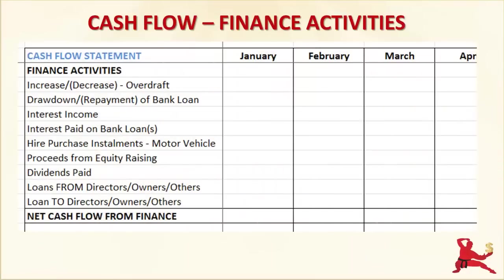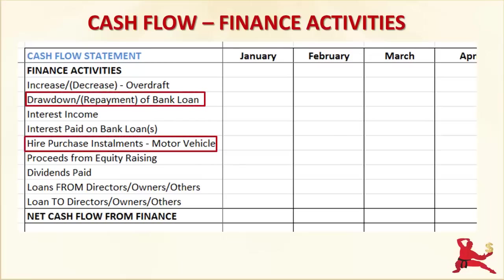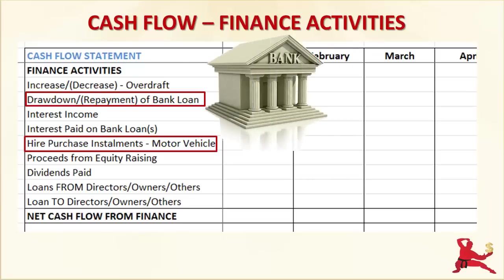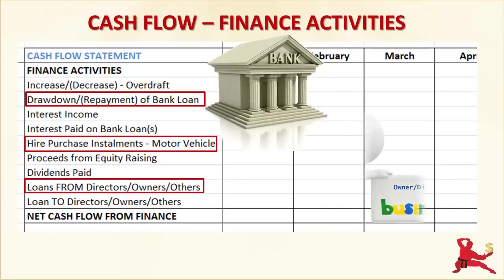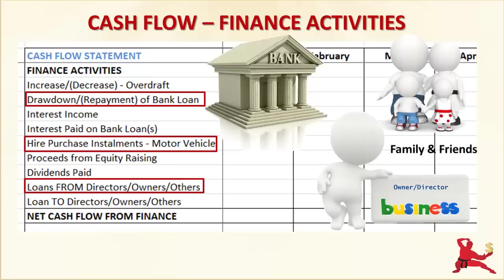In this example, I've set out some typical items that are included in the Finance Activities section. If your business takes out a loan, the borrowings show up as a cash inflow under Finance Activities. The loan can be from a bank, from you as owner of the business, from friends, family, or even your investors. As long as it is a loan to your business, the amount of the loan is a cash inflow. Likewise, all repayments of loans are cash outflows in this Finance Activities section.